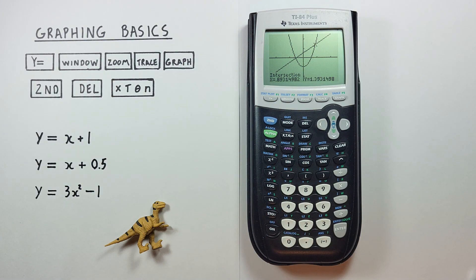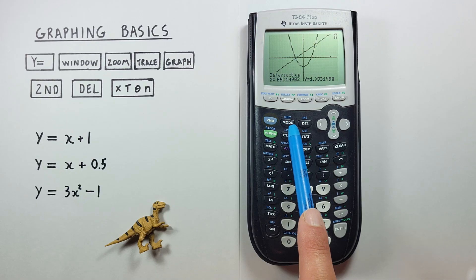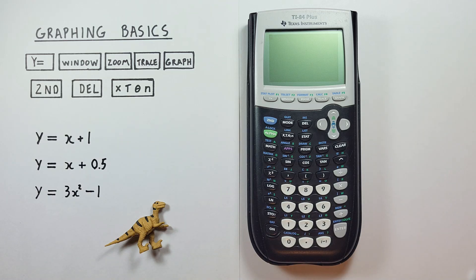When we're done working with our graphs and want to go back to our main screen, all we have to do is hit second mode with the second function of quit. And there we go, we're back to our main screen. Thanks for watching everybody. I really hope this has been helpful. If it has, you can help me out by hitting that like button and subscribe for more calculator tips in the future. And as always, good luck on those tests out there, everybody.